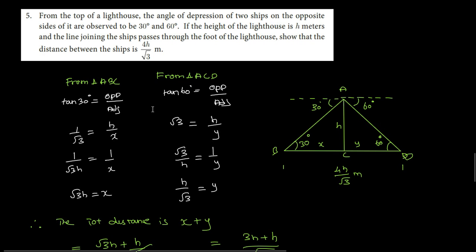Hi students, welcome back to Smartland Tuition. So this is question number 5 in XI 6.3. From the top of the lighthouse, the angle of depression of two ships on the opposite sides of it are being observed to be 30 degree and 60 degree.